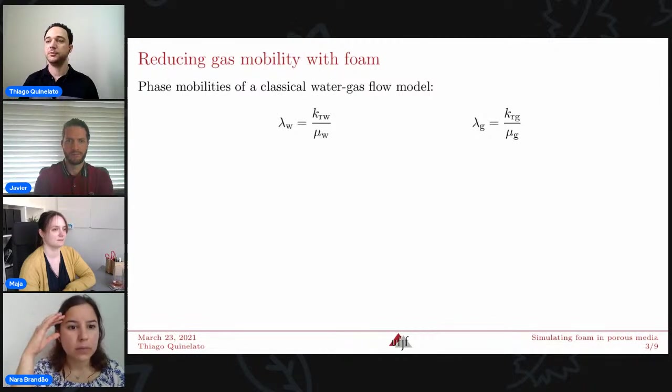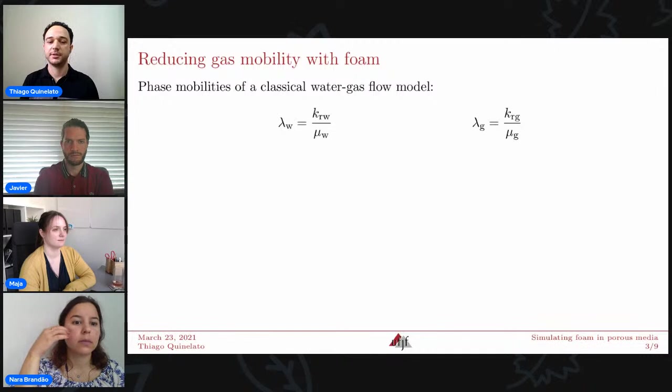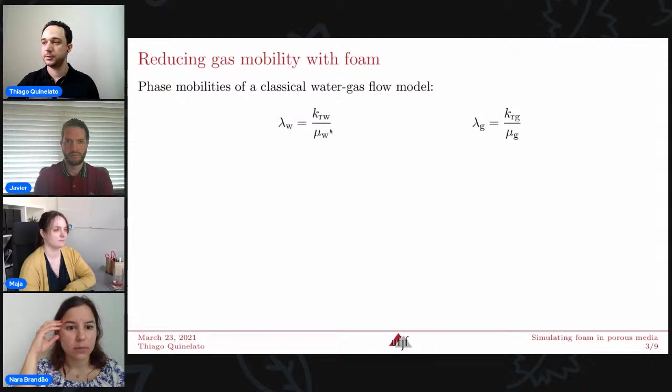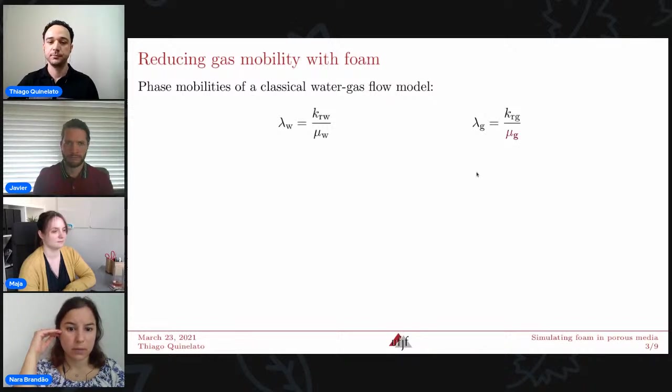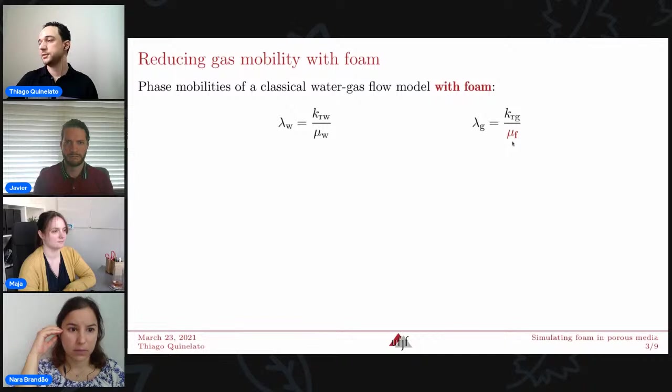So in a classical two-phase flow model with water and gas phases, the mobility of these phases are given by these expressions here. So krw and krg are the relative permeability to water and gas, and mu_w and mu_g are the viscosities of the water and gas phases. When we consider foam instead of injecting gas, we will replace the viscosity of the gas phase by the viscosity of foam.